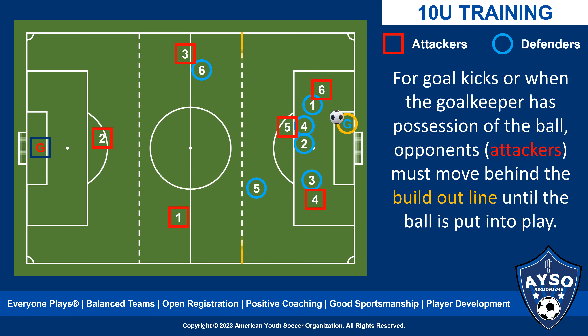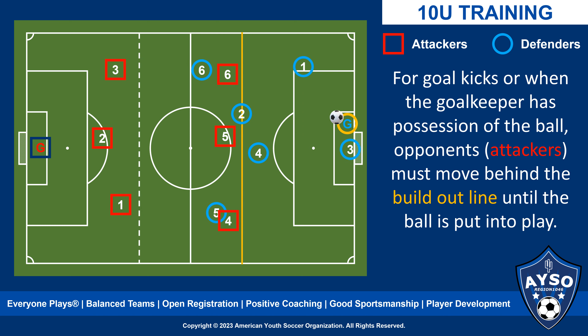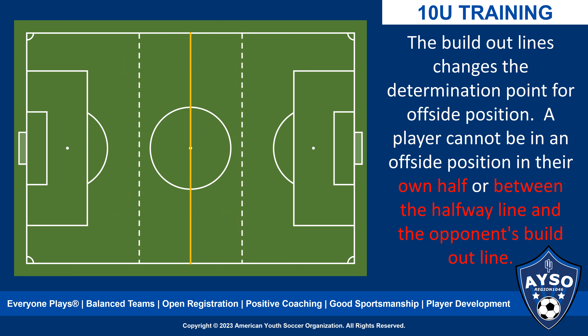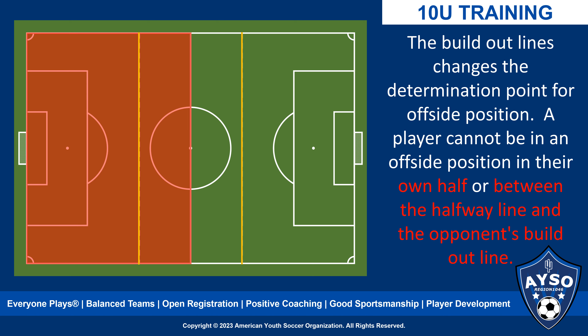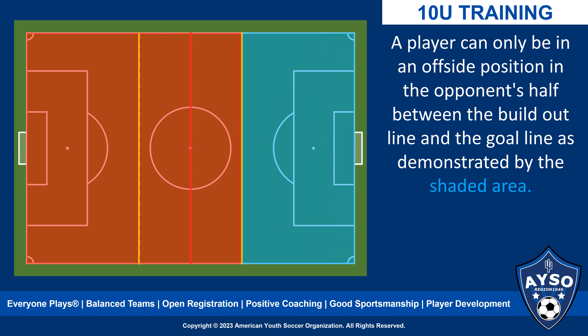All opponents must move behind the build-out line for goal kicks or when the goalkeeper has possession of the ball, and must wait until the ball has been put into play before they can cross the build-out line. Additionally, the build-out lines replace the halfway line as the determination point for offside position. A player cannot be in an offside position in their own half or between the halfway line and the opponent's build-out line. A player can only be in an offside position in the opponent's half between the build-out line and the goal line, as demonstrated by the shaded area.